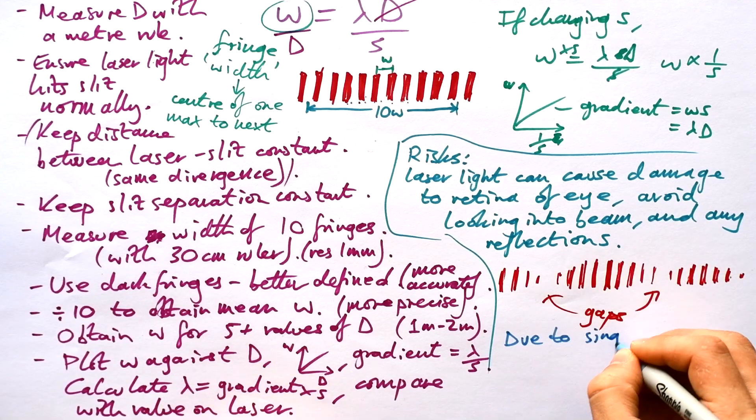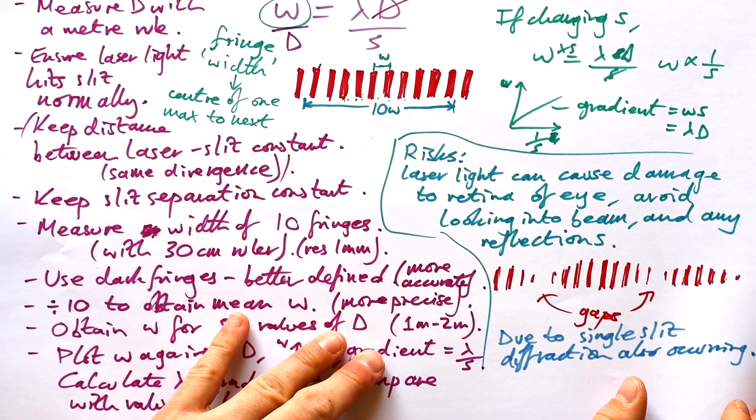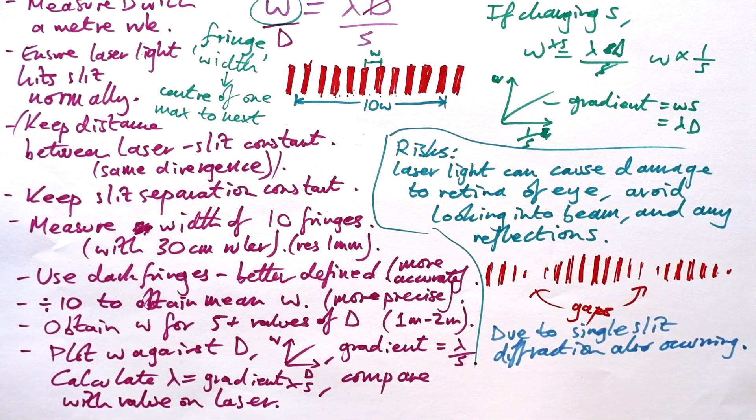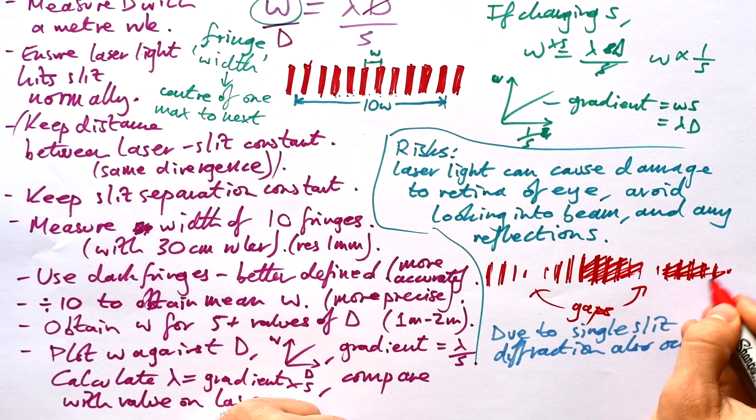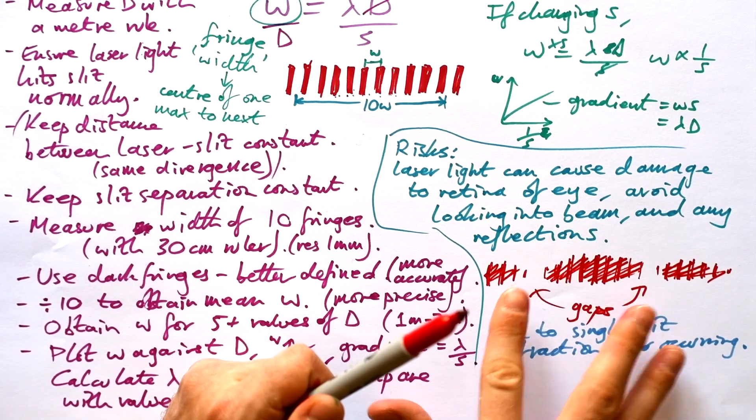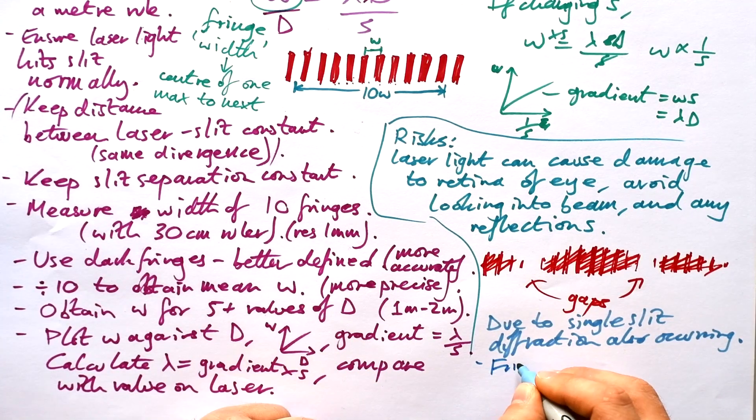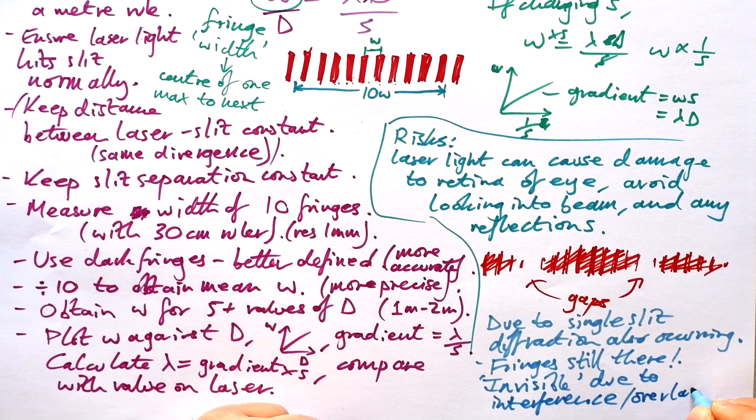When you do the experiment as well you might see gaps in the diffraction pattern. This is due to single slit diffraction also occurring. So when light goes through a double slit yes we obviously get the double slit interference taking place but we get a single slit diffraction pattern as well. If you covered up one of the double slits then you would see this but with solid light which shows that we have really big fringes that are being caused by the single slit diffraction that's taking place. The fringes are still there though they're just invisible due to interference from single slit or we can say overlapping.